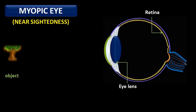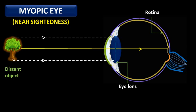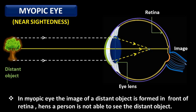When the object is a distant object, far from the human eye, rays coming from the distant object, after refraction, meet in a single point in front of the retina. So in this position, the focus of the eye lens is in front of the retina. These refracted rays do not collect on the retina — they collect in front of the retina. Hence, the image of a distant object is formed in front of the retina, and a person is not able to see the distant object clearly. Myopia is also known as nearsightedness because this person can see a nearby object clearly.